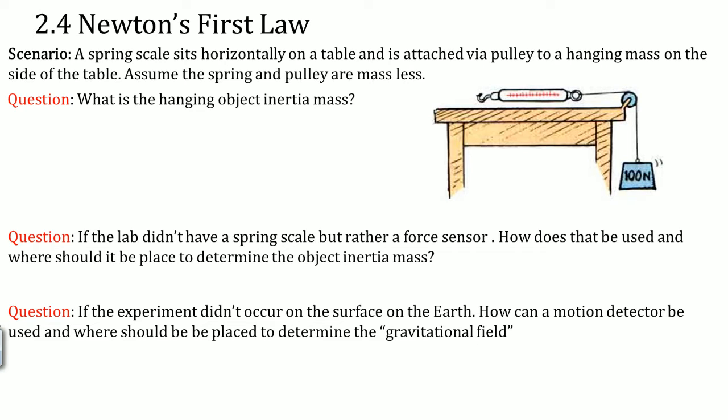Scenario: A spring scale sits horizontally on a table and is attached via a pulley to a hanging mass on the side of the table. Assume the spring and the pulley are massless, so it's an ideal pulley. What is the hanging object's inertial mass?